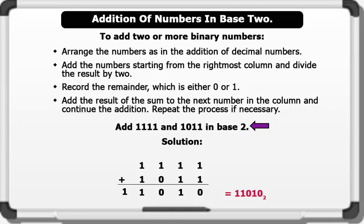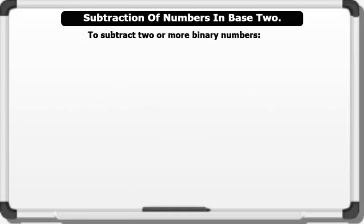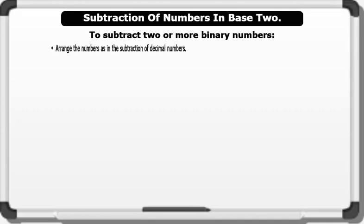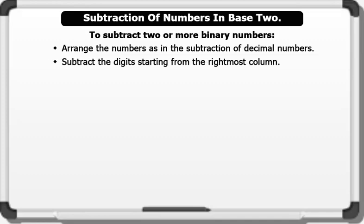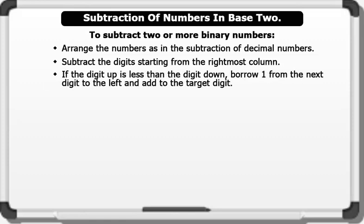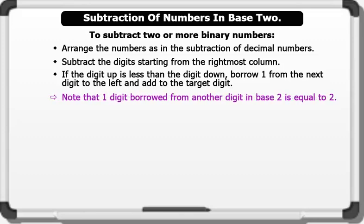Now let's see how to subtract numbers in base 2. To subtract two or more binary numbers, we arrange the numbers as in the subtraction of decimal numbers. We subtract the digits starting from the rightmost column. Note that if the digit on top is less than the digit below, borrow one from the next digit to the left and add it to the target digit. Note that one digit borrowed in base 2 is equal to 2.